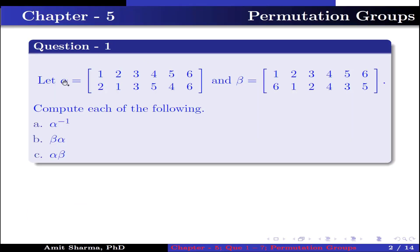Question number 1. Let alpha be the permutation in which 1 has image 2, 2 has image 1, 3 has image 3, 4 has image 5, 5 has image 4 and 6 has image 6. And beta is the permutation in which 1 has image 6, 2 has image 1, 3 has image 2, 4 has image 4, 5 has image 3 and 6 has image 5. Compute each of the following: part A, alpha inverse; part B, beta alpha; part C, alpha beta.